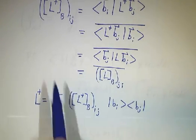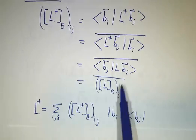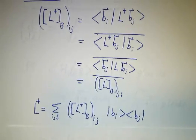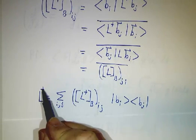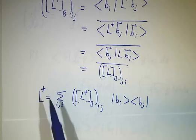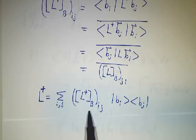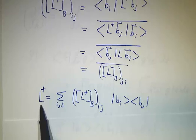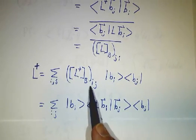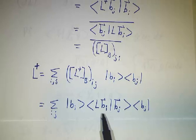In other words, the matrix of L' is the transpose conjugate of the matrix of L. And you can also express the operator L' itself in terms of bras and kets. If you know the matrix elements, you know the operator. You take the matrix elements times the outer product of b_i with b_j. So you can always write L' as this sum, or you can write it this way, because L' is Lb_i dotted into b_j.